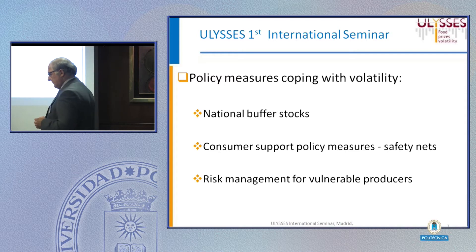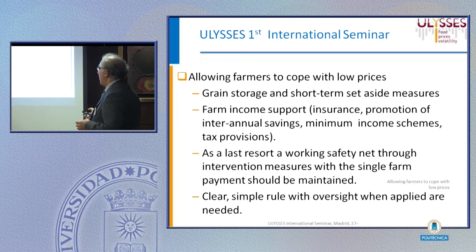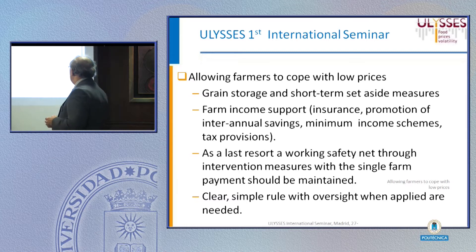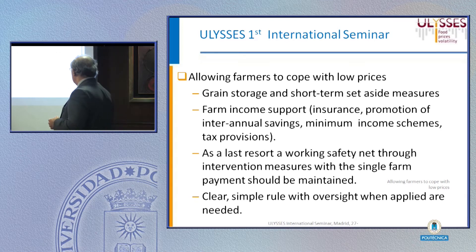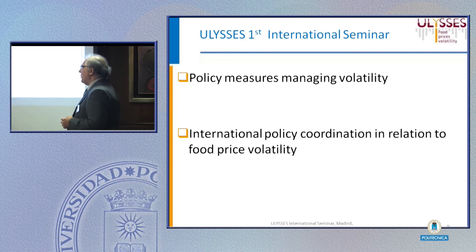The other group of measures are aimed to cope with volatility: national buffer stocks, consumer support policies, different safety nets, and risk management for vulnerable producers. Also in this group are measures targeted at farmers which allow them to cope with low prices, grain storage, farm income support, single farm payment, and other interventions with clear simple rules applied. The final group of policy measures supports the managing of volatility, including coordination between international and national policies in relation to food price volatility.